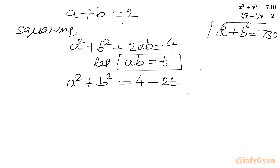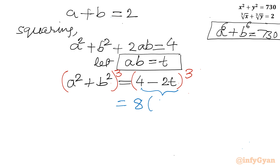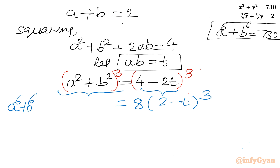Now let us cube both sides of the equation a plus b equal to 2. Taking 2 common, the right-hand side becomes 8 times (2 minus t) cubed. On the left-hand side, applying the (a plus b) whole cube formula where a is a² and b is b², we get a⁶ plus b⁶ plus 3a²b², which is 3t squared, times (a squared plus b squared), which is 4 minus 2t.